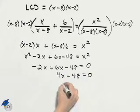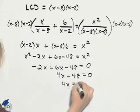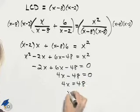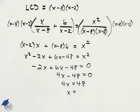We can then add 48 to both sides of the equation, and then divide both sides by 4, and 48 divided by 4 is 12.